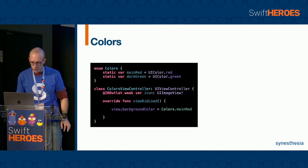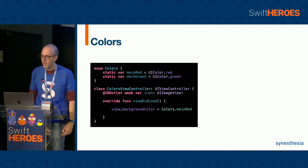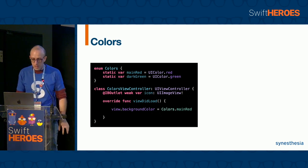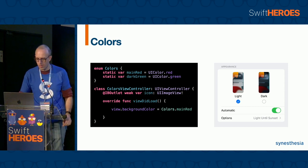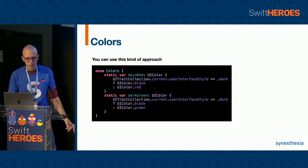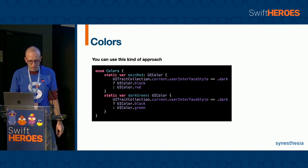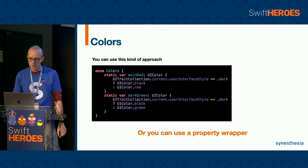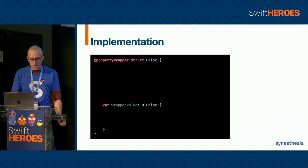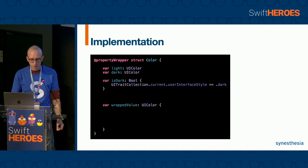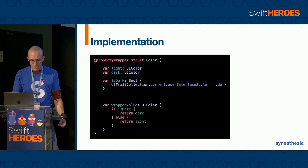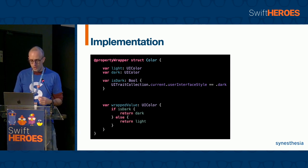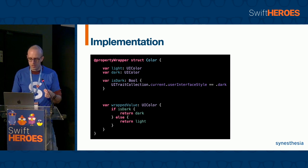The last use case I want to show you is about colors. Imagine having an app with an existing color implementation and you want to manage the app colors according to the device appearance — for example light or dark. You can use a kind of approach like this one, but you can also use a property wrapper. The implementation is very simple: we have to define the light and the dark colors, and a property that tells us if the current interface style is dark.